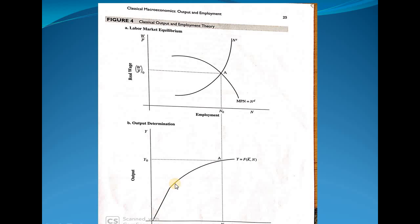The production function has its particular shape because initially we witness constant returns to scale — shown as a straight line — then we witness diminishing returns to scale, giving the curve its characteristic shape, and then negative returns to scale if we extend further, with output falling from Y₀. This shape is due to the law of diminishing marginal returns. Observe this figure carefully, as you will use it to show how population shifts the labor supply curve, and how changes in technology shift the production function and the marginal productivity of labor.